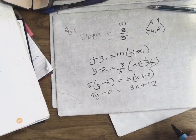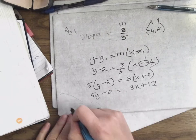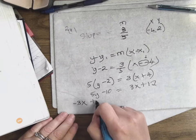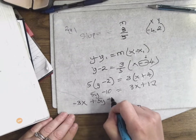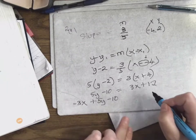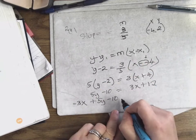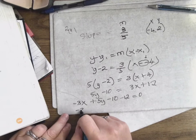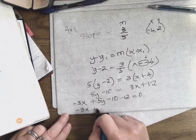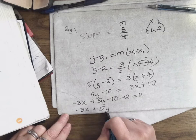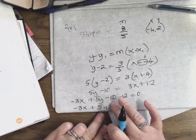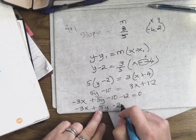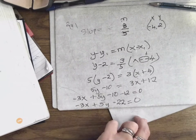Bring everything over to the left, x term first. So three x comes over and becomes minus three x. Five y is here already, so it stays as plus five y. Minus ten is on this side already, so it stays as minus ten. Plus twelve comes over the wall and becomes minus twelve, equals zero. So that's minus three x plus five y minus twenty two equals zero.